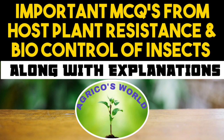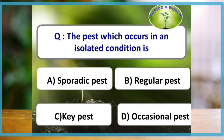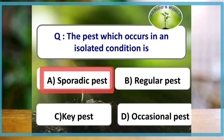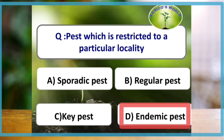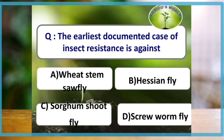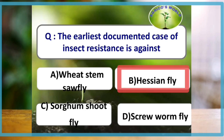The pest which occurs in an isolated condition is known as a sporadic pest. A pest which is restricted to a particular locality is known as an endemic pest. The earliest documented case of insect resistance is against the Hessian fly.